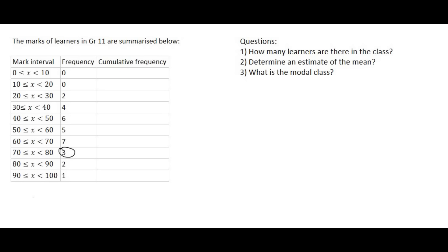The first question says how many learners are there in the class? Well there's two people in this interval, four people in that interval, six people in that interval. So you would just add all of those numbers together and if you add those numbers together you'll get a total value of 30.